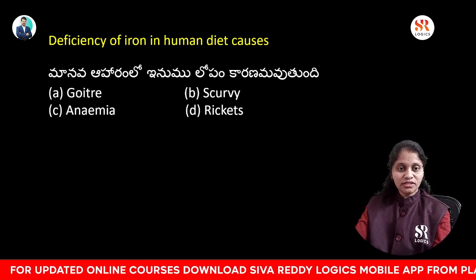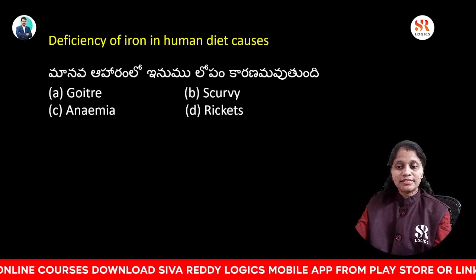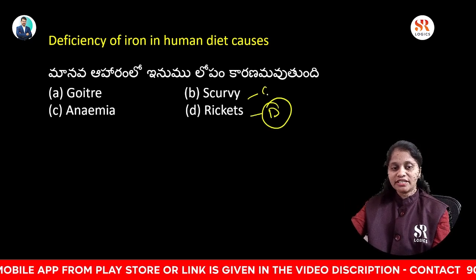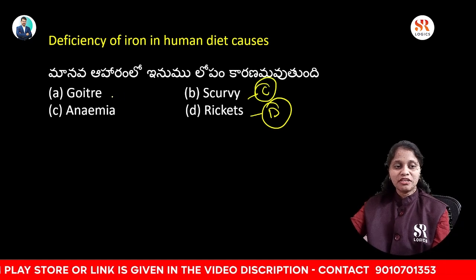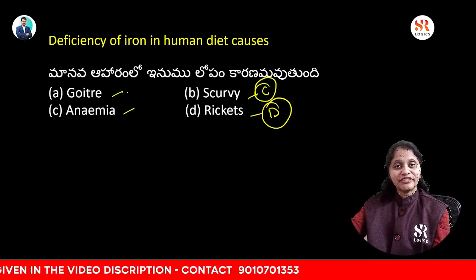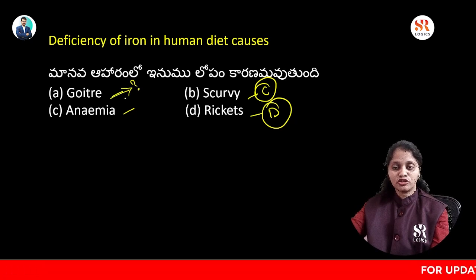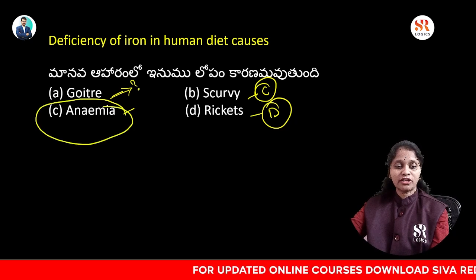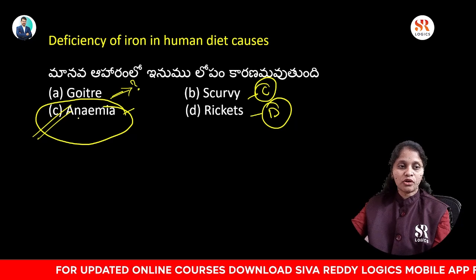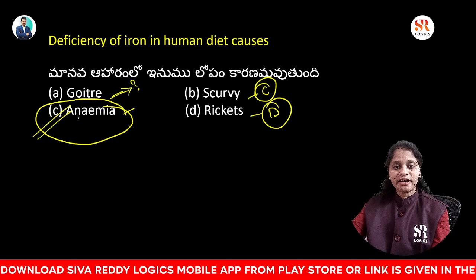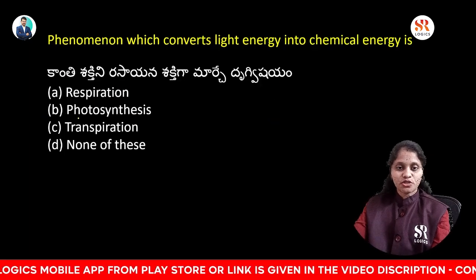Deficiency of iron in human diet causes: goiter, scurvy, anemia, or rickets? Rickets is due to deficiency of vitamin D. Scurvy is due to deficiency of vitamin C. The deficiency of iron in the human diet causes anemia. So the answer is anemia.